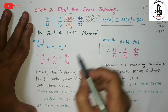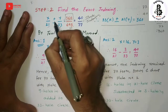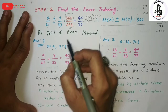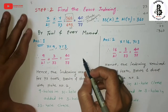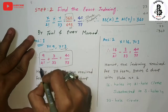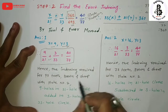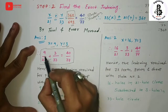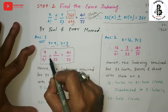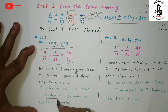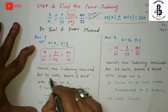Substituting x = 9 and y = 3 into the equation: 9/21 + 3/33 = 40/77. Hence, the indexing required for 77 teeth using Brown and Sharp plate number 2 is: 9 holes in the 21-hole circle system, using the positive sign - meaning added to 3 holes in the 33-hole circle system - to obtain 77 teeth.